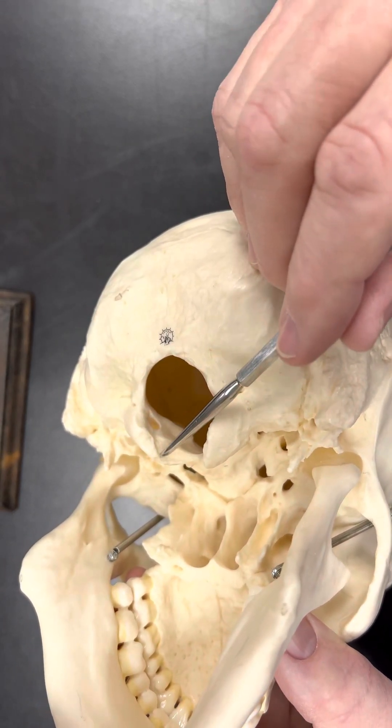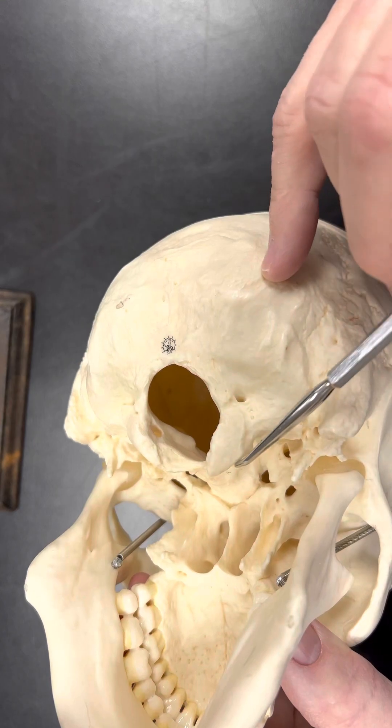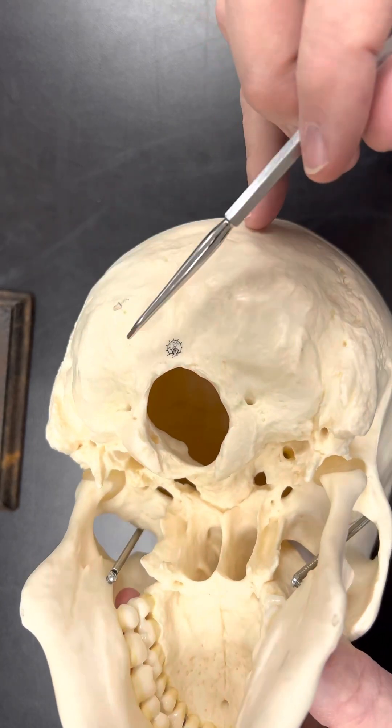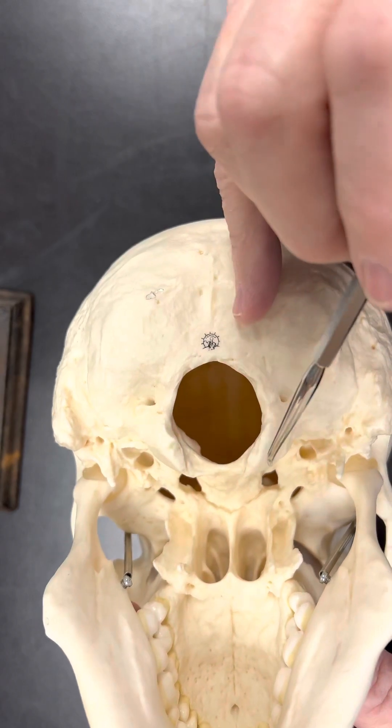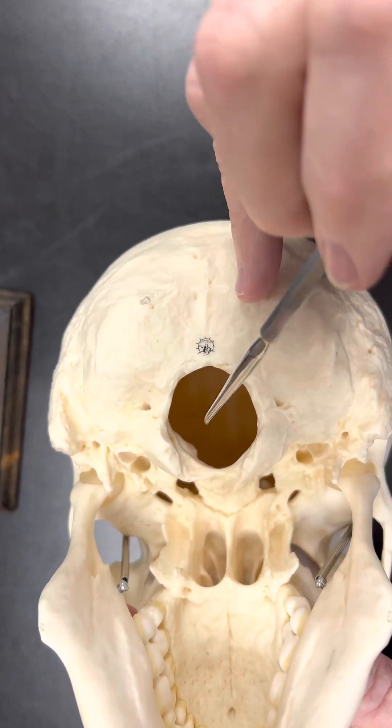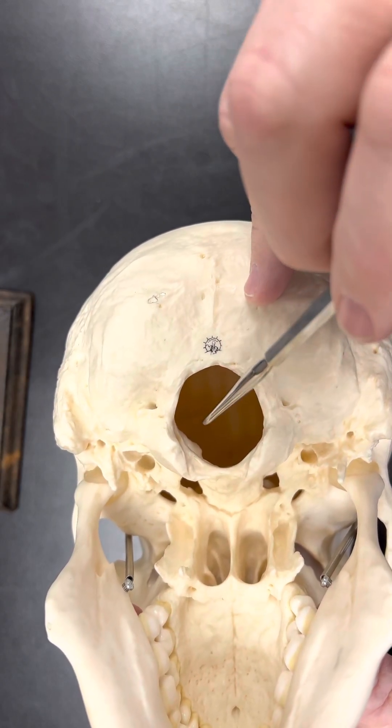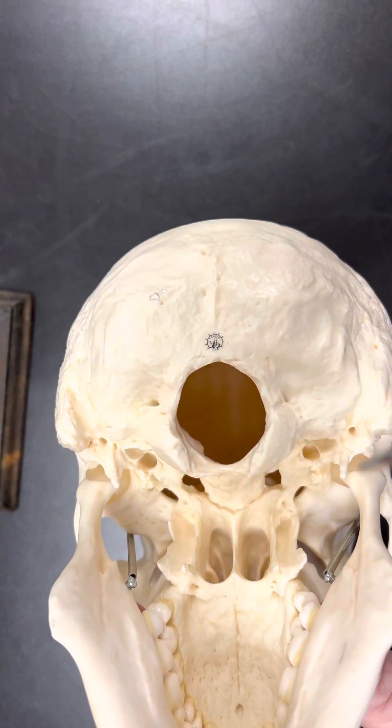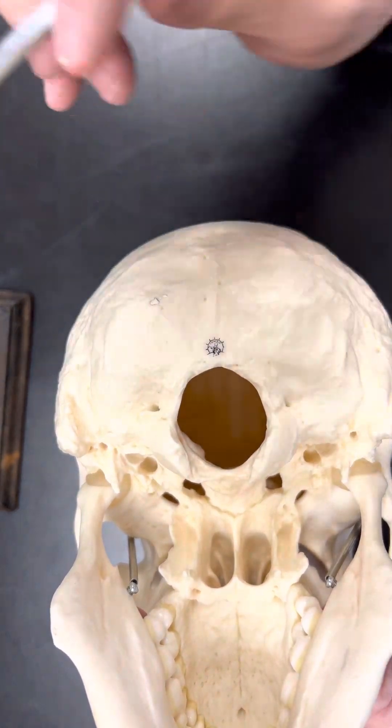And that is going to be my occipital condyles here and here. That's occipital condyles. And then these are going to connect to C1, the first cervical vertebrae. And then if we look, we have the foramen magnum right here.